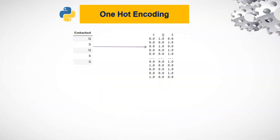One-hot encoding is basically when we have categorical data — for example, in this case it is the 'embarked' column with values Q, S, and one more unique value C. What it will do is create a column for each unique value in the categorical data, giving a value of one if that value exists and zero if it does not exist. This way it converts one categorical column into as many columns as there are unique categories in that column.